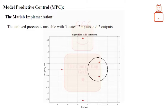The utilized process is unstable with five states, two inputs and outputs. The eigenvalues of the state matrix are as shown. We have three poles outside the unit circle, the bold black circle. The process is unstable.